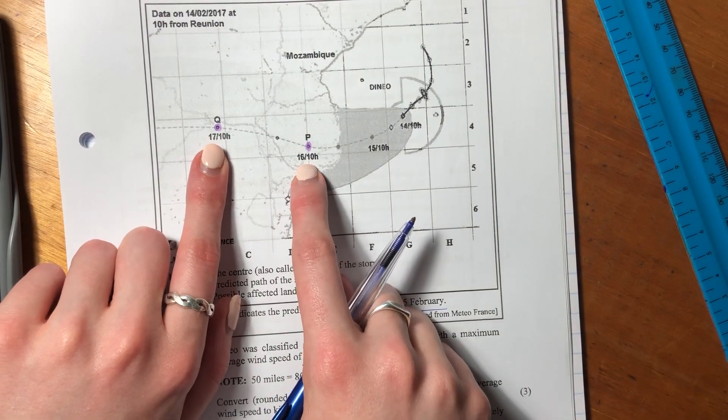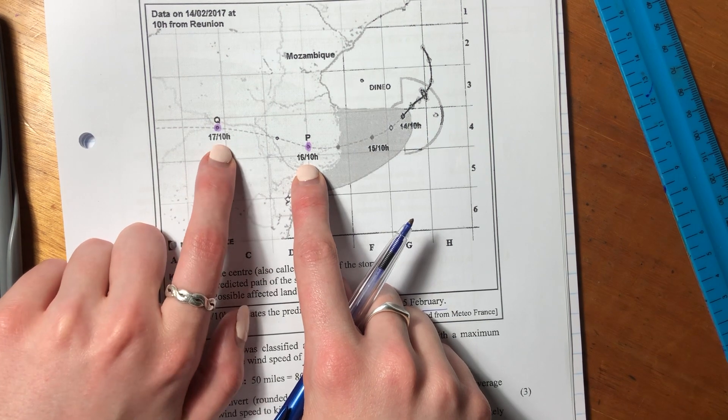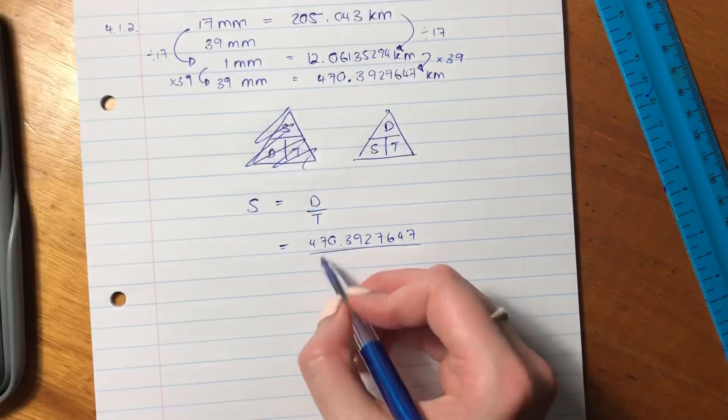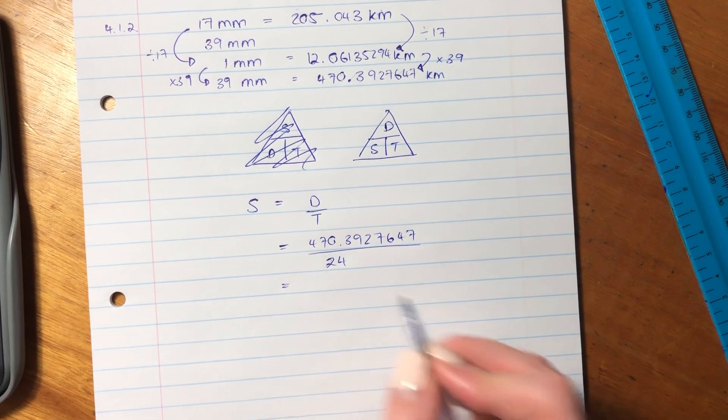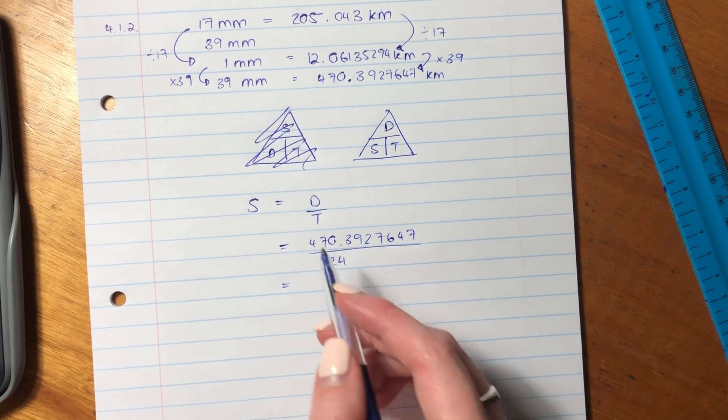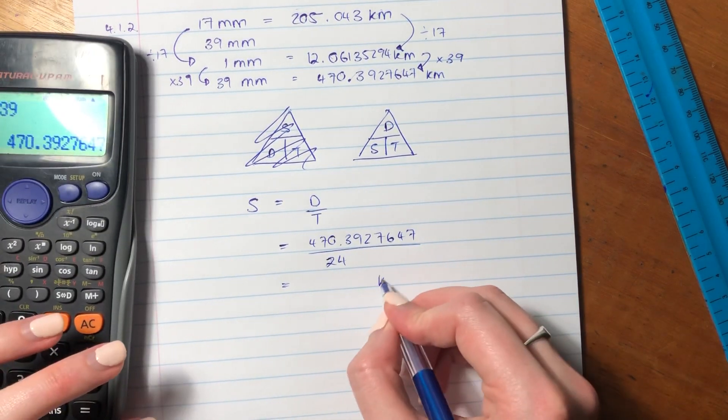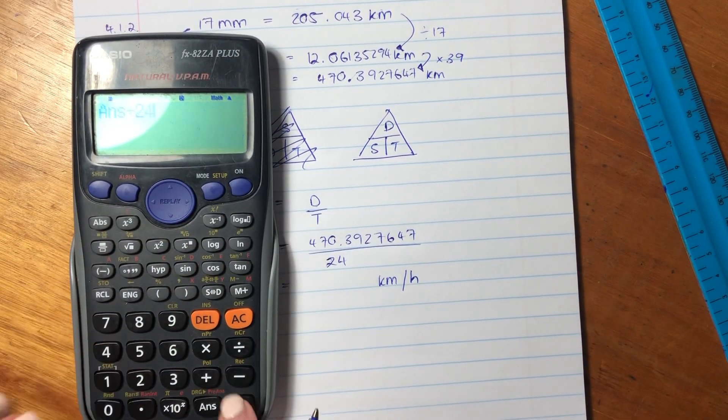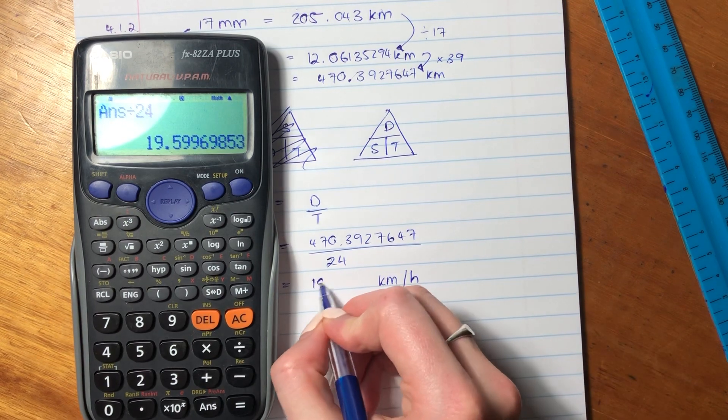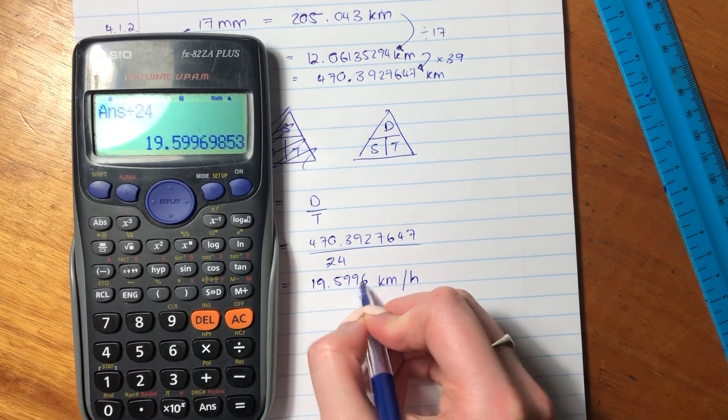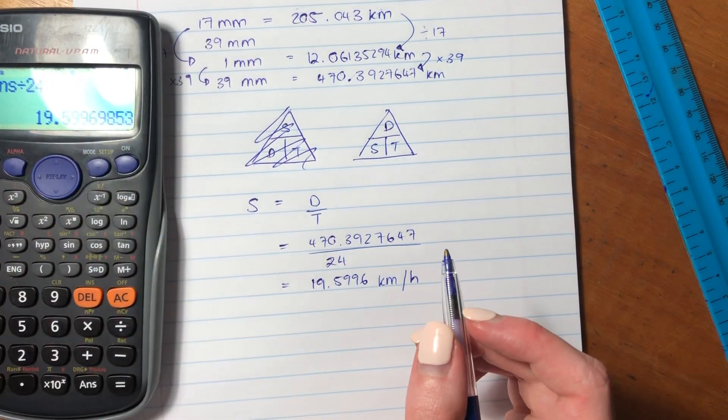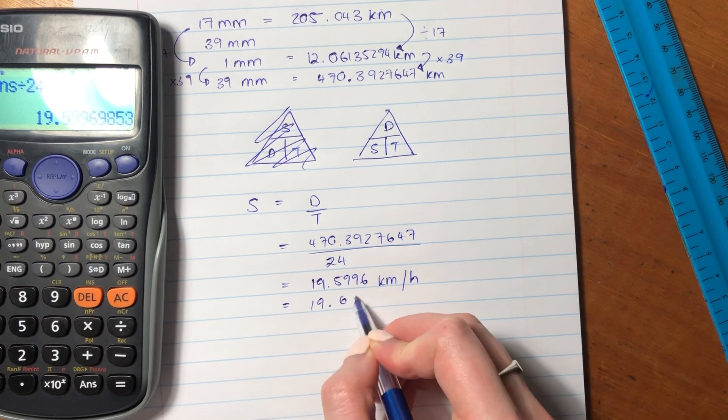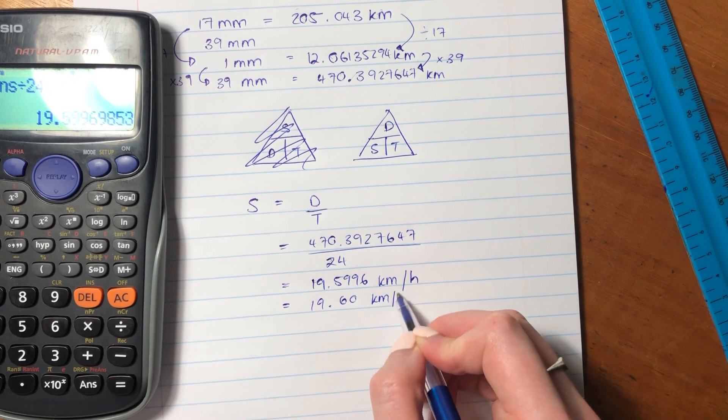Well, we see that P is 10 o'clock on the 16th and Q is 10 o'clock on the 17th. So there's 24 hours between the two. So this is going to be 24 hours. So we have this distance and this is the number of hours. So the answer here is going to be in kilometers per hour. So take the distance that you had there, divide it by 24, and you'll get 19.5996. Let's round it off to two decimal places, and we get 19.60 kilometers per hour.